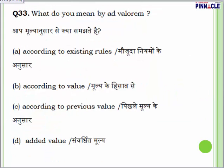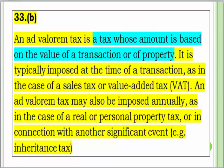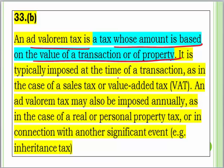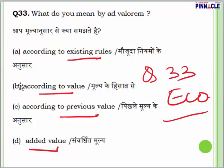Question 33 from Economics: What do you mean by ad valorem? Options are according to existing values, according to value, according to previous value, or added value. An ad valorem tax is a tax whose amount is based on the value of a transaction or of property. It is imposed at the time of the transaction, as in the case of a sales tax or value added tax, or annually as in the case of real or personal property tax. Answer is B — ad valorem means according to value.